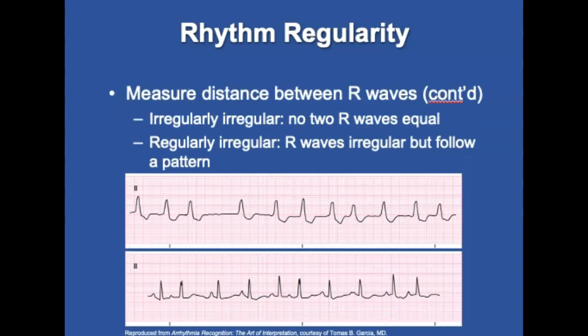You can also have an irregularly irregular rhythm, and that is when no two R waves are equal. Then you could also have a regularly irregular rhythm — that's when the R waves are irregular, but they appear to follow a pattern. In the first example, you can see it's an irregularly irregular rhythm; in the second, there is regular irregularity.